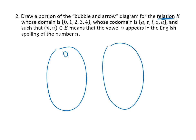In this case, our domain is 0, 1, 2, 3, and 4. And again, we can put dots if we want. And then our codomain is A, E, I, O, U, those five letters. And now the rule is that we have an ordered pair (n, v) if the vowel v appears in the English spelling of the number n. So if we have that pairing, then we draw an arrow.